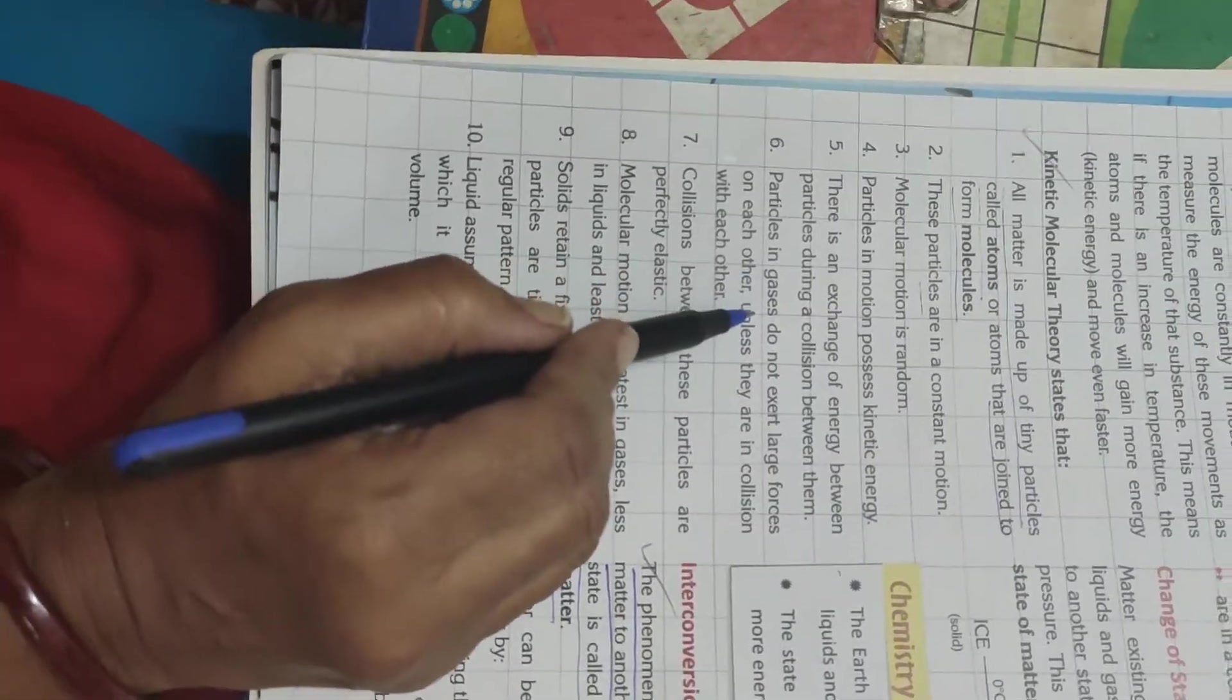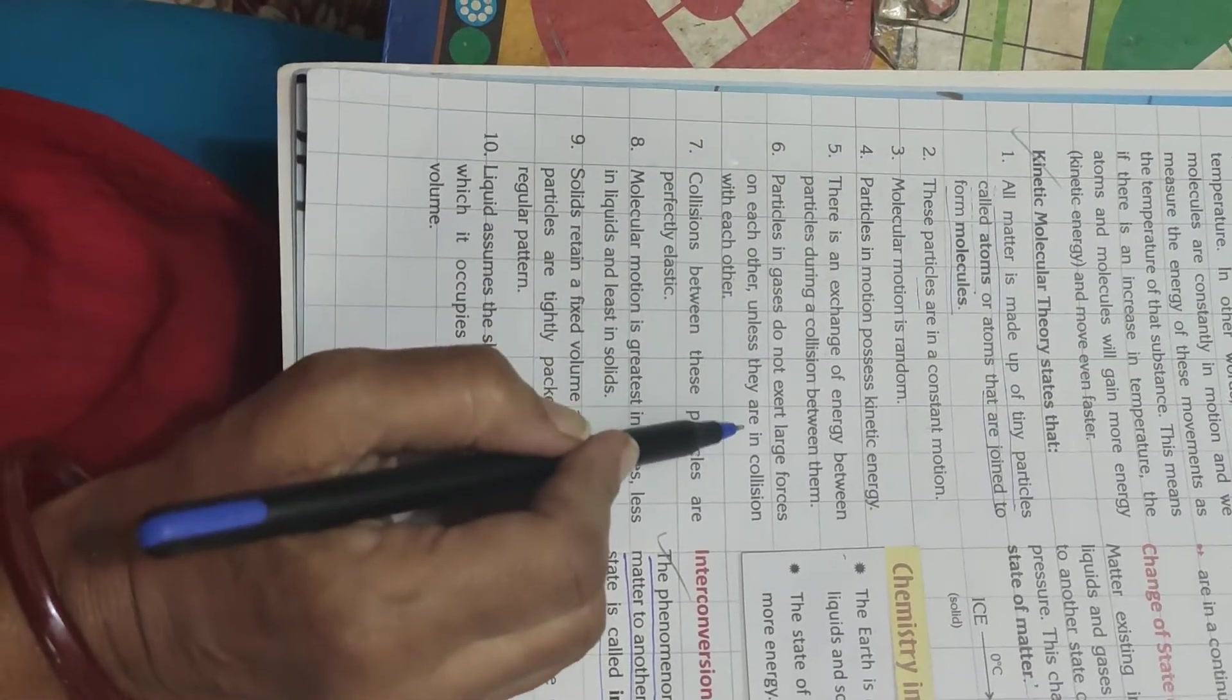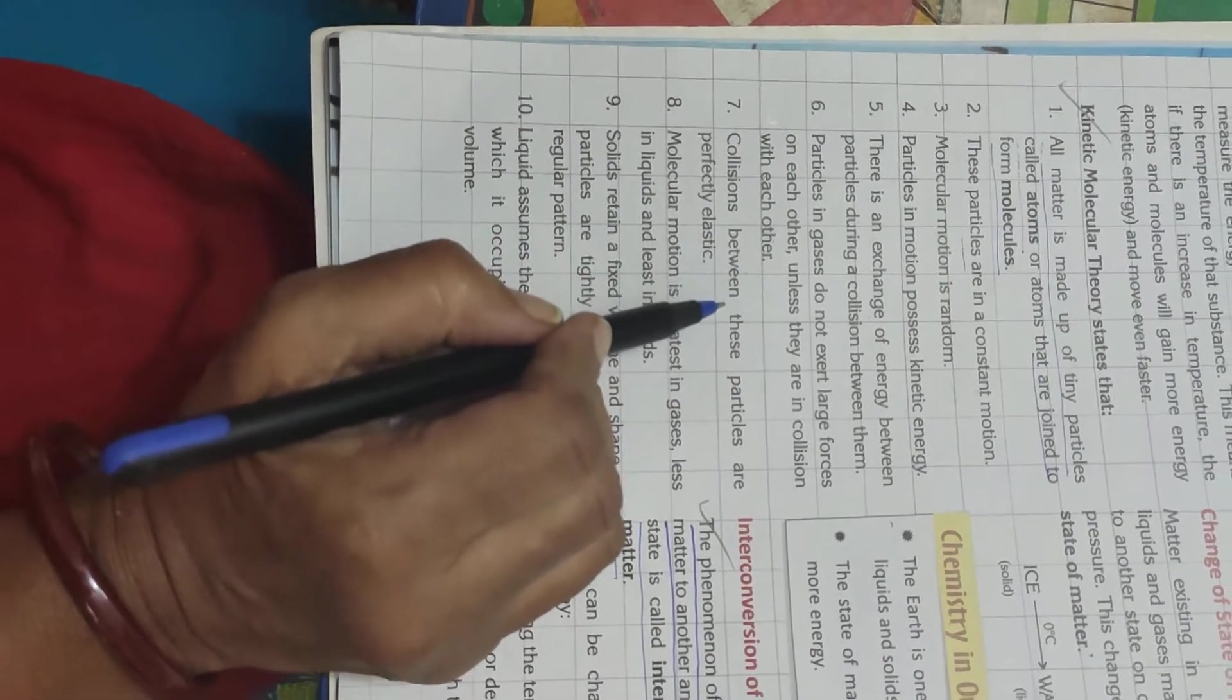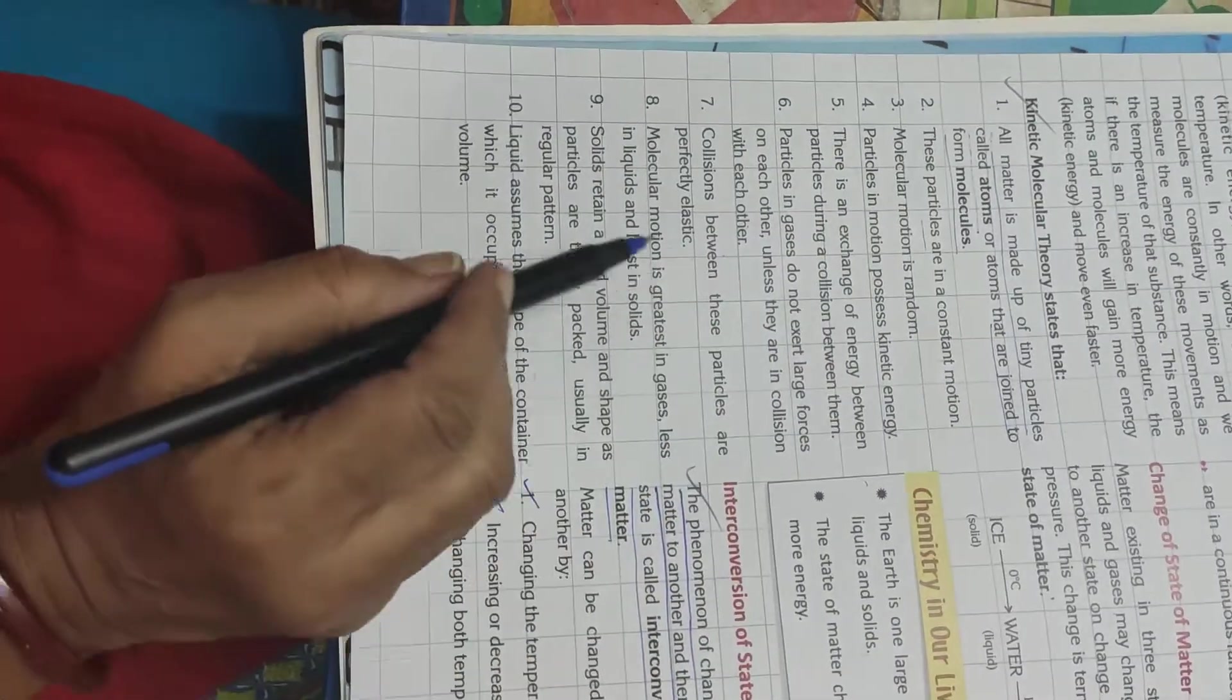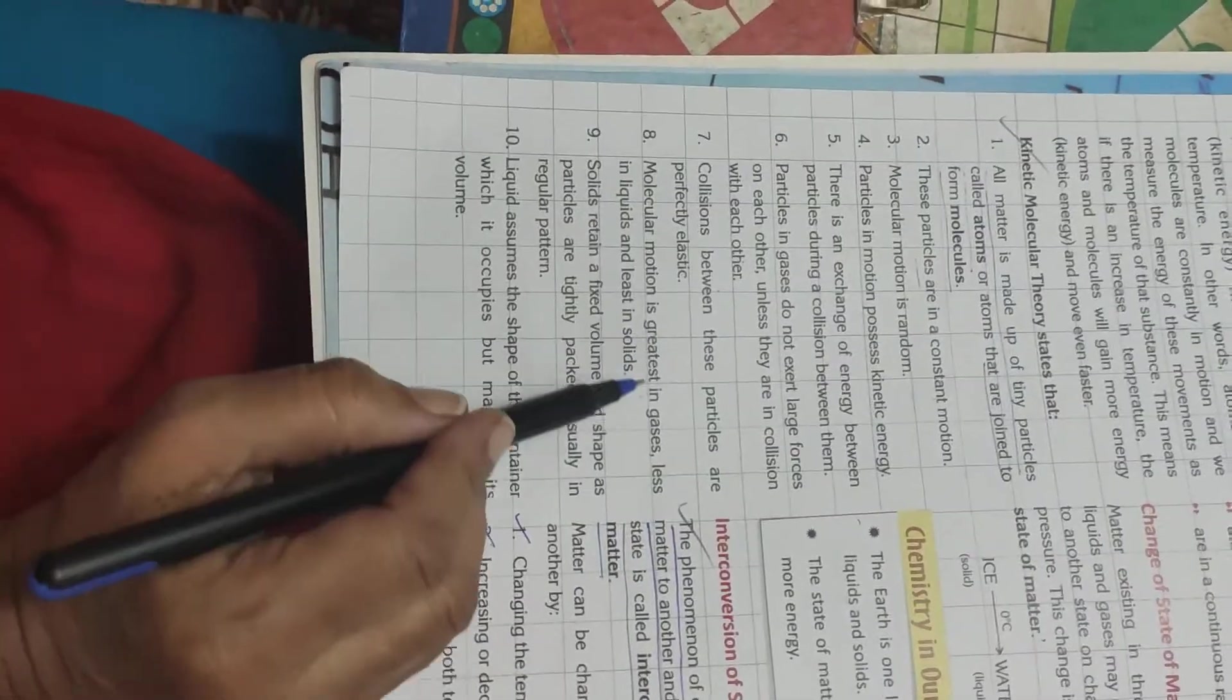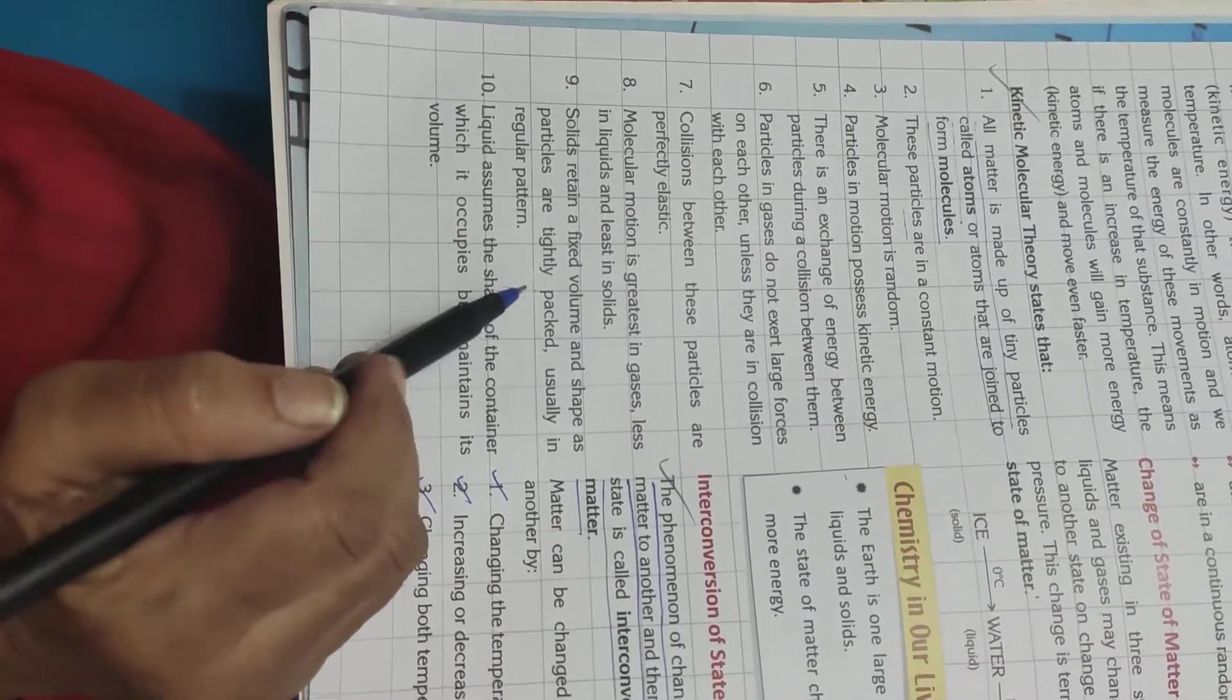Particles in gases do not exert large forces on each other, unless they are in collision with each other. Collisions between these particles are elastic. Means, they don't stop. They keep on moving. Molecular motion is greatest in gases, less in liquids and least in solids.